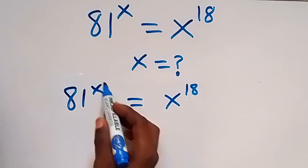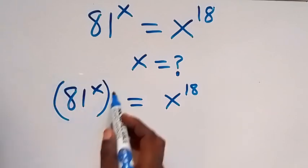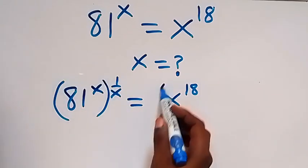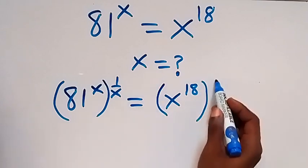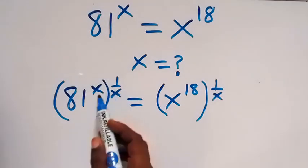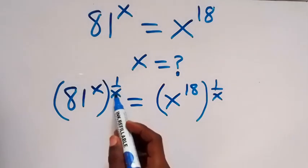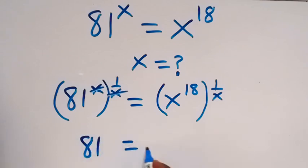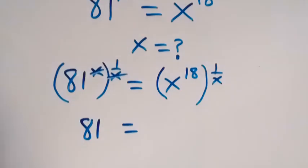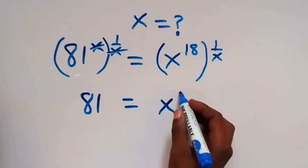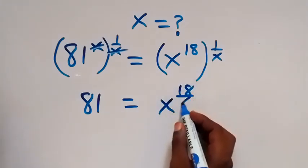From here, to remove this power of x, let's multiply both sides by raising to the power of 1 over x. So multiply this side as well by raised to the power of 1 over x. Then this power multiplies from the law of indices, and this x — we cancel this x. So we are left with 81 here.